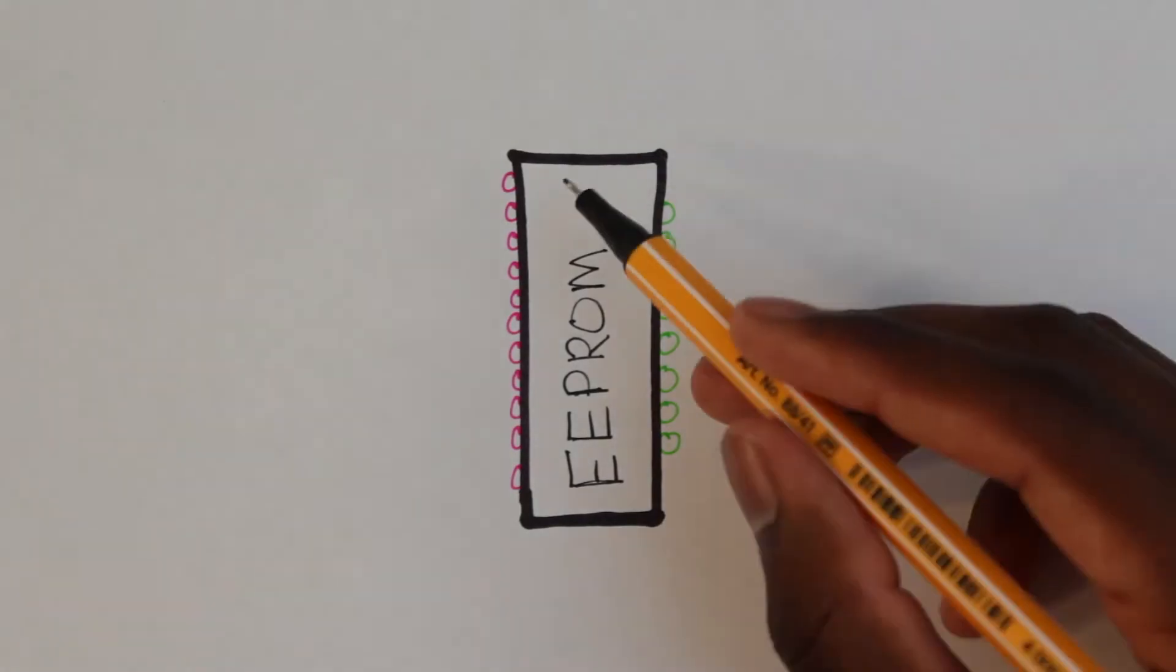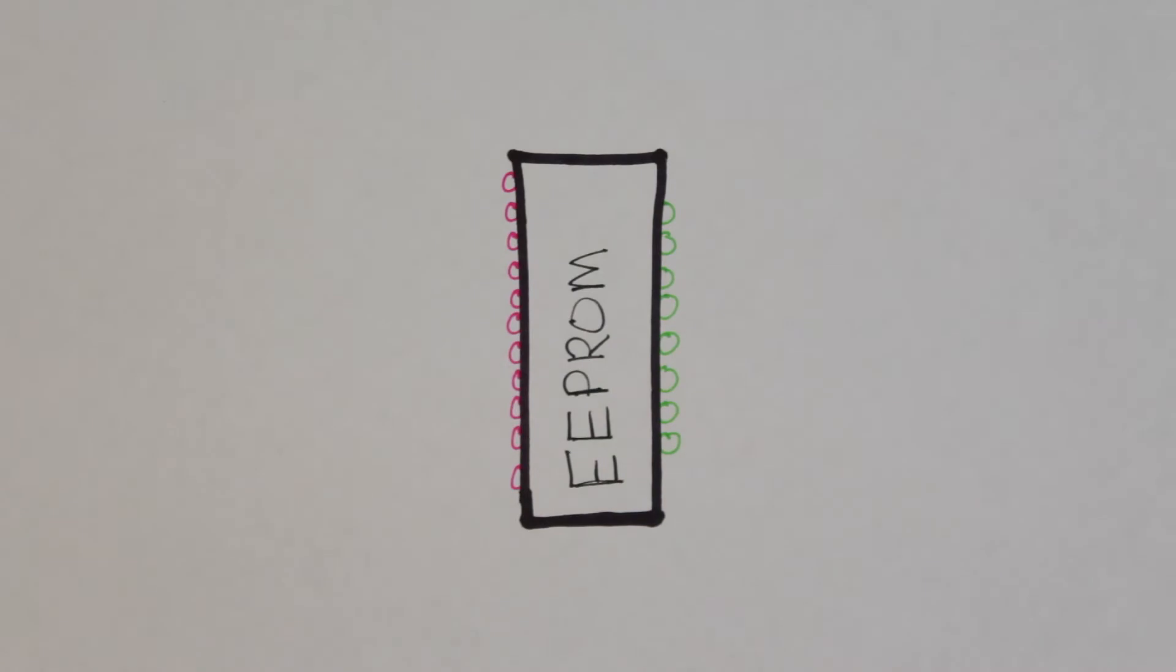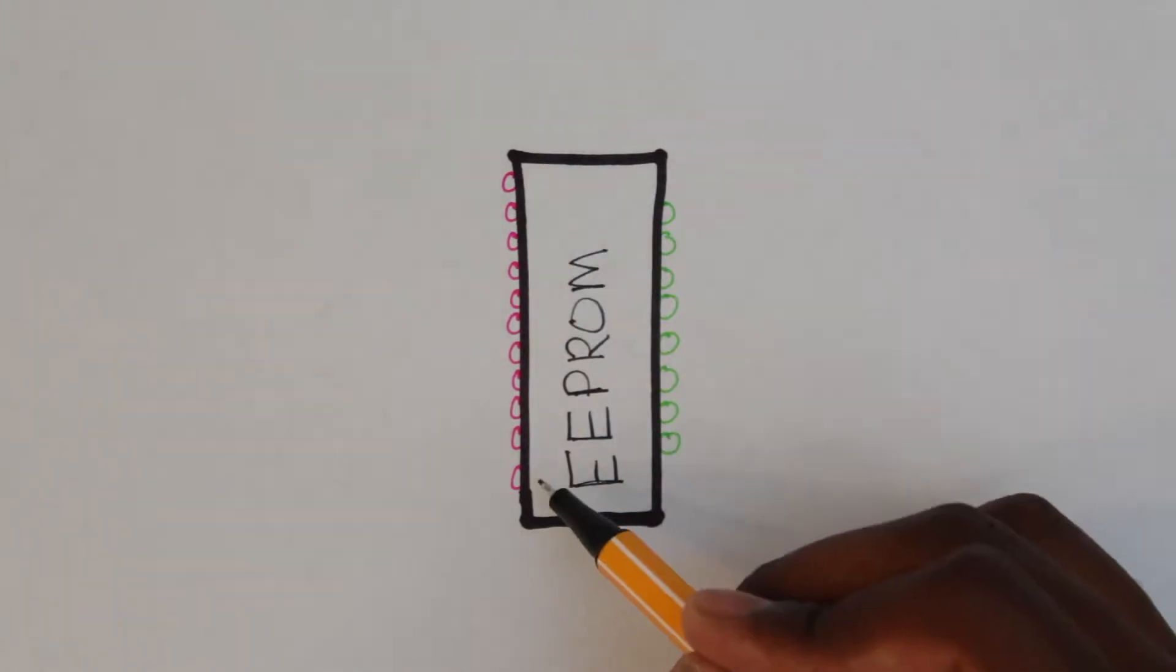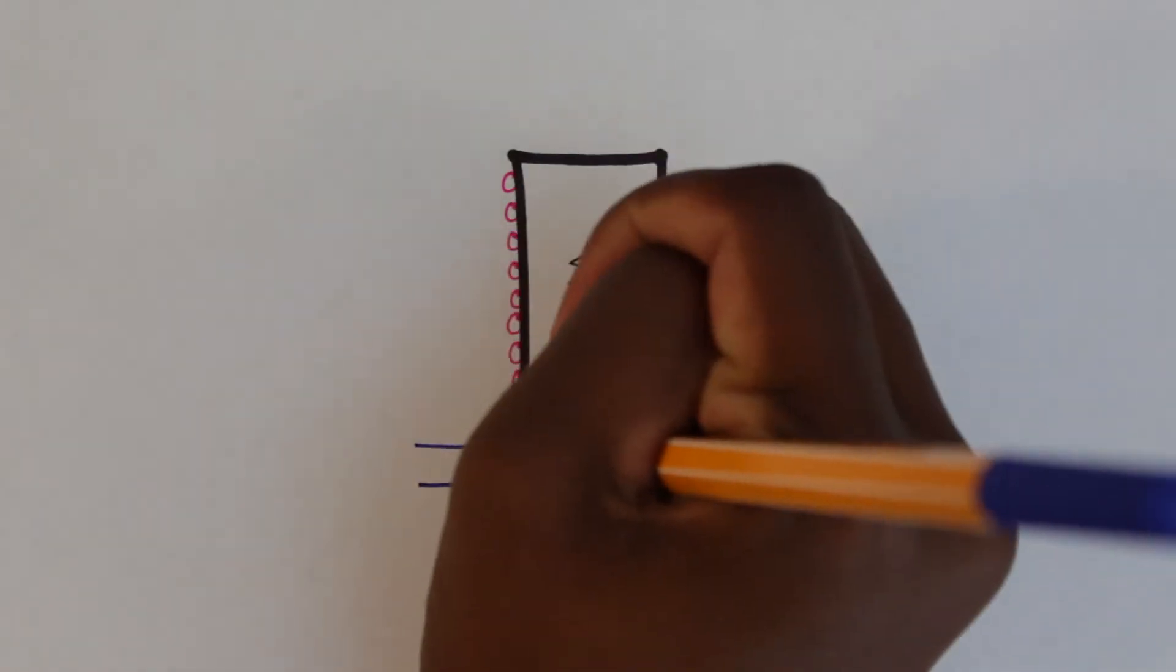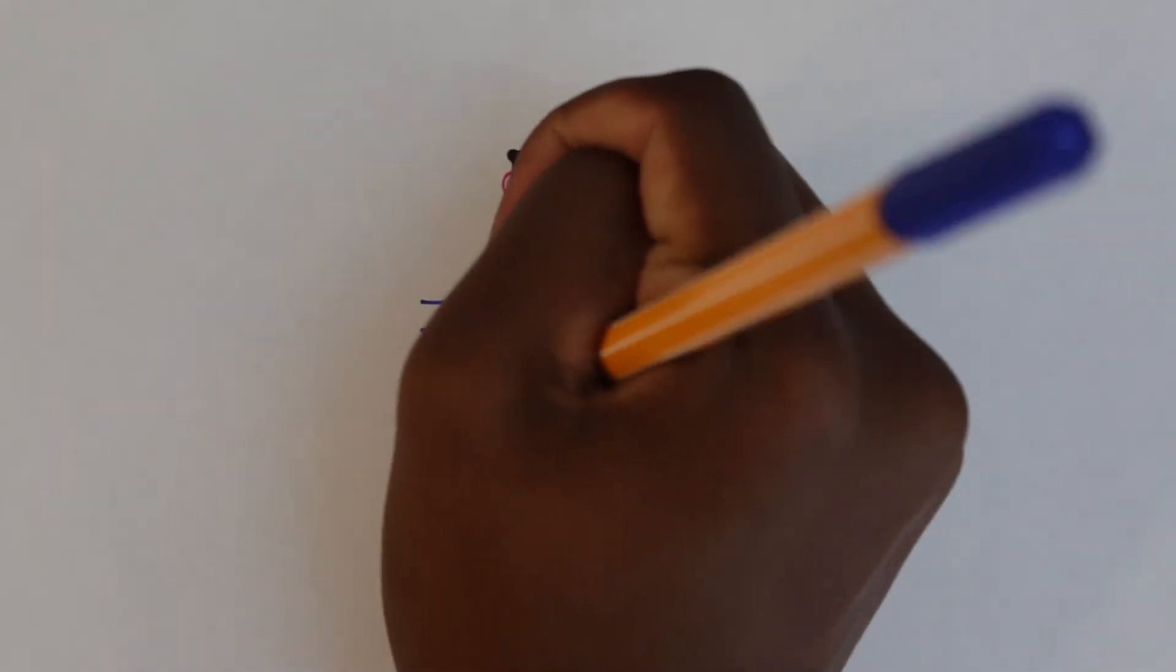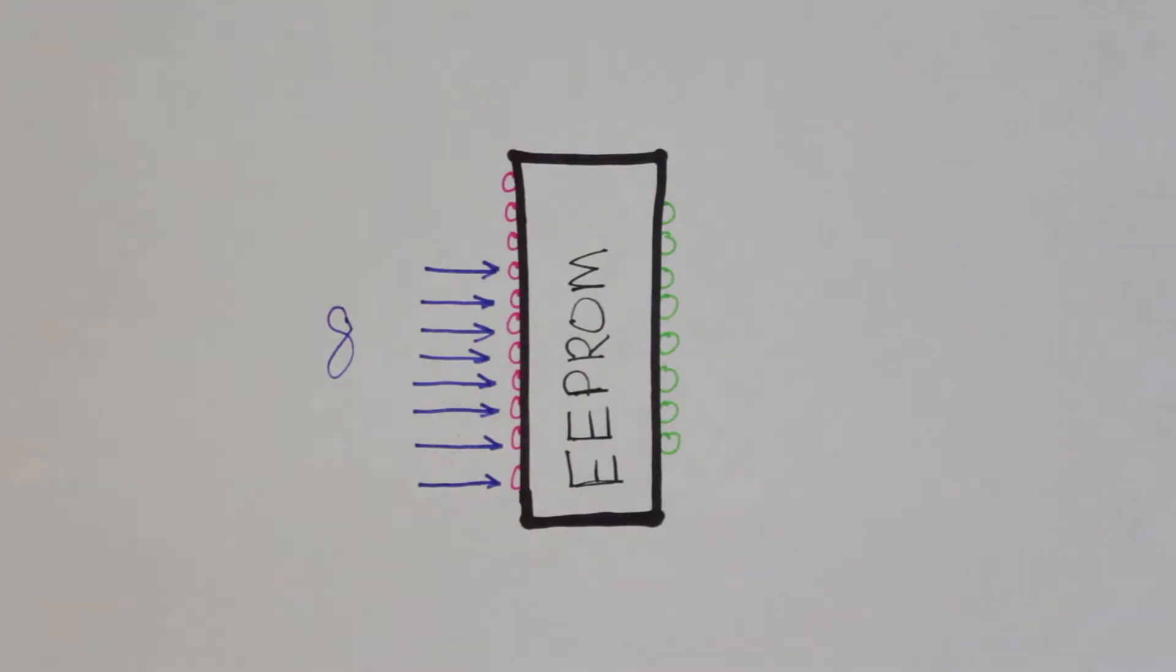For 16K bits, or 2K bytes, you need 11 address pins. So the left side is the address pins, and the right is our 8 output pins. The 8 bits to be translated will go into 8 of the 11 address pins.